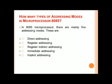How many types of addressing modes are in microprocessor 8085? In the 8085 microprocessor there are mainly five addressing modes: direct addressing mode, register addressing mode, register indirect addressing mode, immediate addressing mode, and implicit addressing mode.